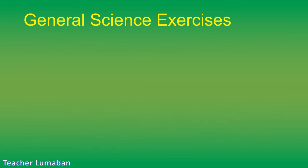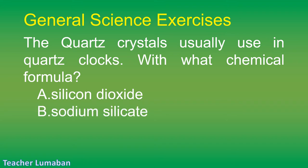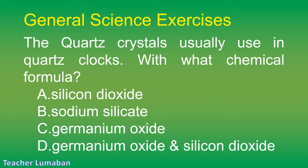The quartz crystals usually used in quartz clocks — with what chemical formula? Letter A: silicon dioxide. Letter B: sodium silicate. Letter C: germanium oxide. Letter D: germanium oxide and silicon dioxide.